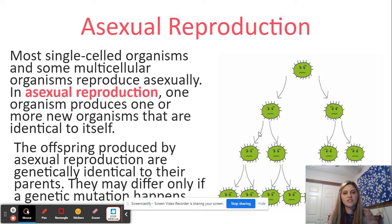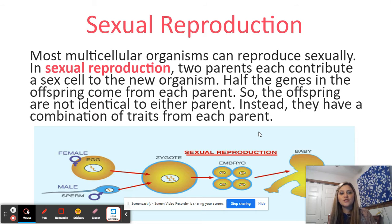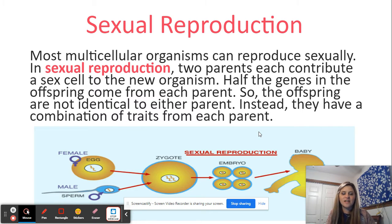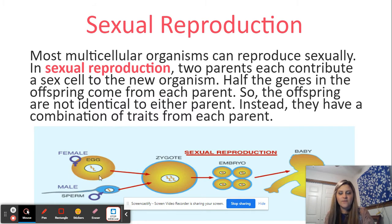Sexual reproduction happens when two parents contribute information to create a whole new organism. Whereas asexual reproduction had one parent creating an identical copy, sexual reproduction gives the offspring traits from both parents, making it unique. This usually happens in multicellular organisms but takes more time because they are complex. Females generally have an egg and males generally have sperm — in humans, a female's egg has 23 chromosomes and a male's sperm has 23 chromosomes.